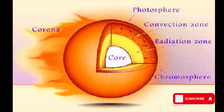The different layers of the Sun are: the outermost gaseous layer which contains maximum radiation is the corona. The surface is the photosphere. Then there is the convection zone, radiation zone, and chromosphere. The central part of the Sun is the core.